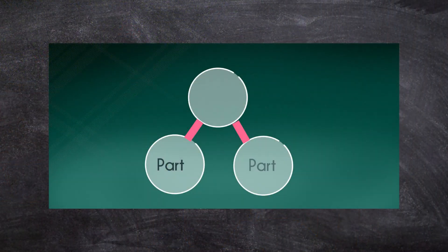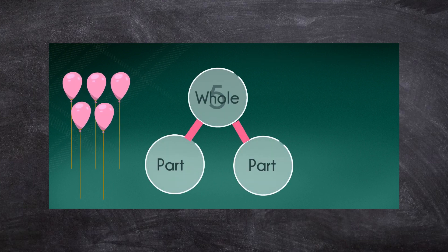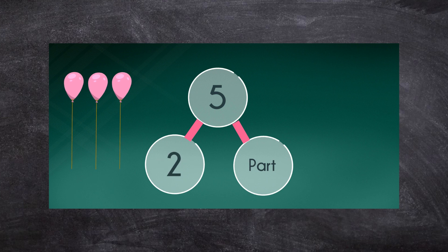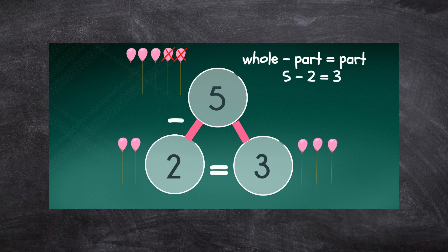I'm going to model how to do this. In subtraction, we are given the whole number and asked to subtract a part — the answer would be the other part. Here we have five balloons, so five is our whole number. If two of those balloons popped, one of the parts would be two: five subtract two. How many balloons do we have left? Three. So five subtract two equals three. We can also switch the parts around: five subtract three equals two.